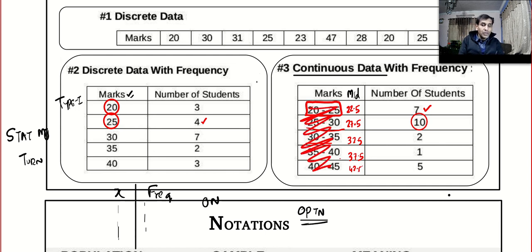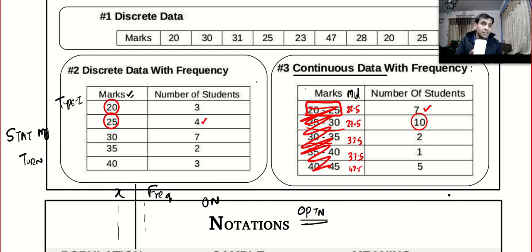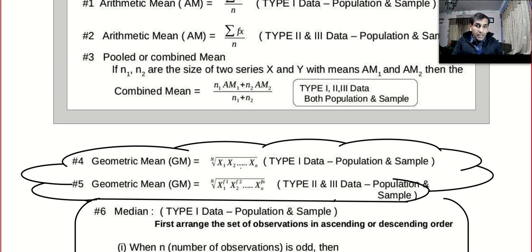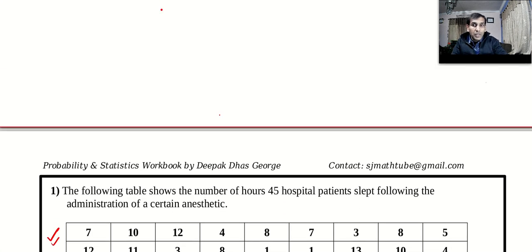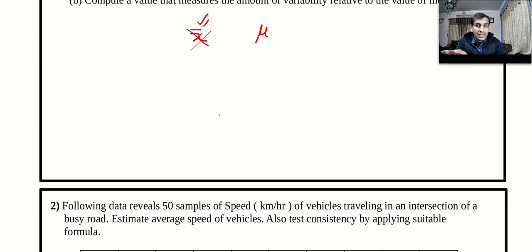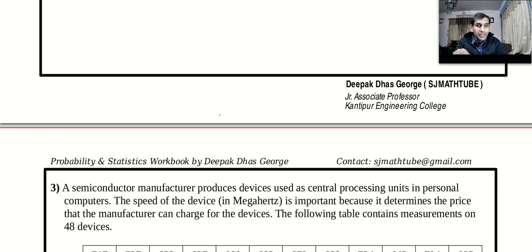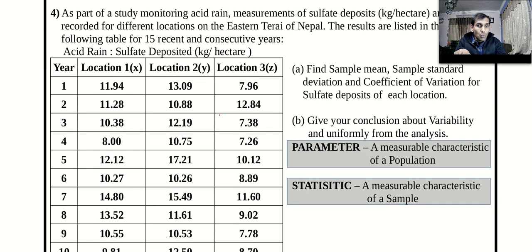Now take your calculator, put it into stat mode, turn on frequency, and plug in all the mid values. I want you to do it and put the answers in the comments. Next Tuesday we will start working with past paper questions — I have collected all the past paper questions as a book and we will work through them one by one.